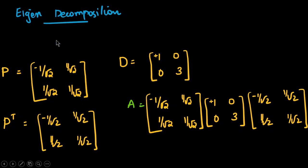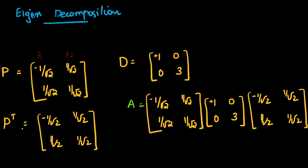We can now write the eigenvector matrix P, where the first column is P1 and the second column is P2. P transpose is written with P1 as the first row and P2 as the second row. D is a diagonal matrix with the eigenvalues 1 and 3 along the diagonal. So A can be written in the decomposed form as P times D times P transpose — that is the eigenvector decomposition for matrix A.